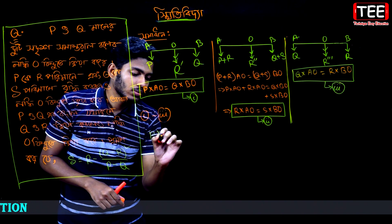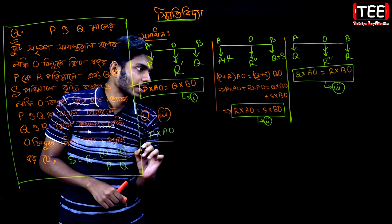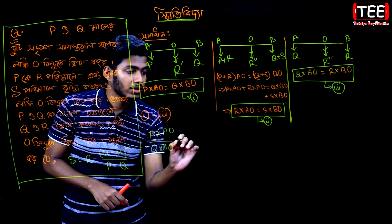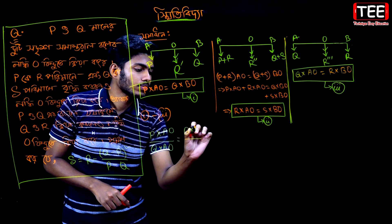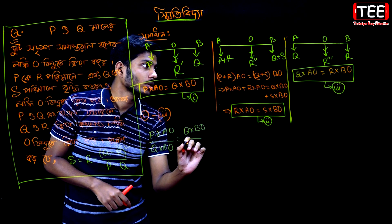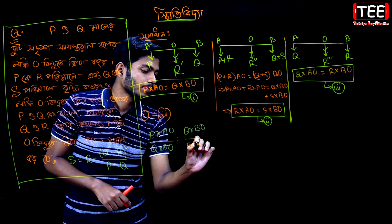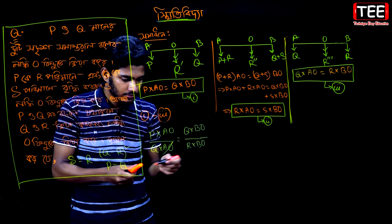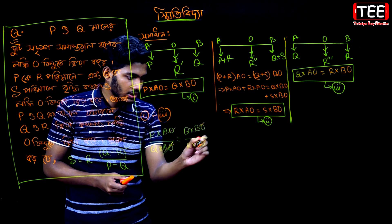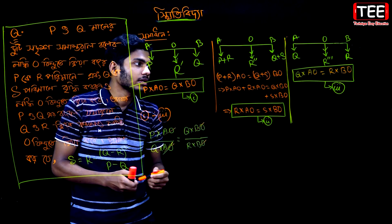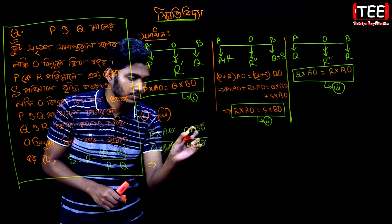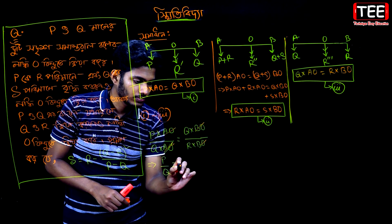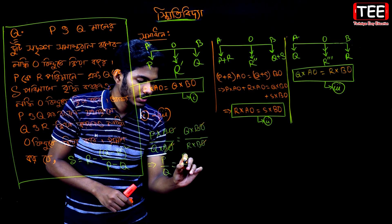1 is equal to p into a₀ divided by q into a₀, which is equal to q into b₀ divided by r into b₀. Let's take a look at this. P divided by q is equal to q divided by r.